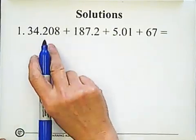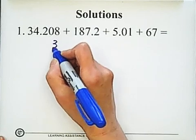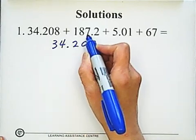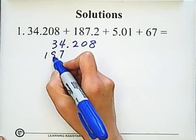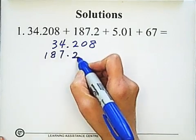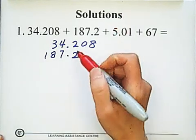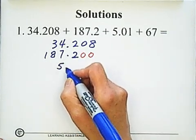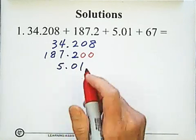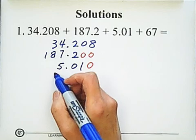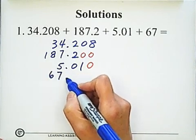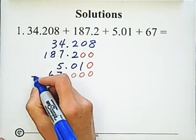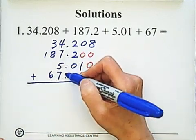34, line up the decimal point: 34.208, then 187.2, then 5.01, and the last number is 67. We need to add zeros. So add three zeros after 67. Line up the decimal point so all the digits with the same place value align.